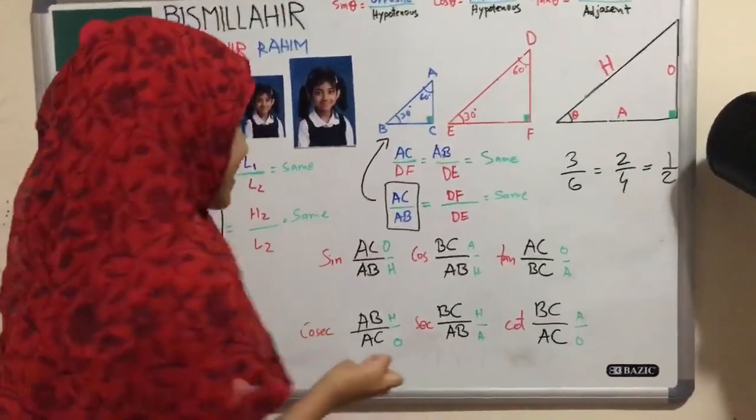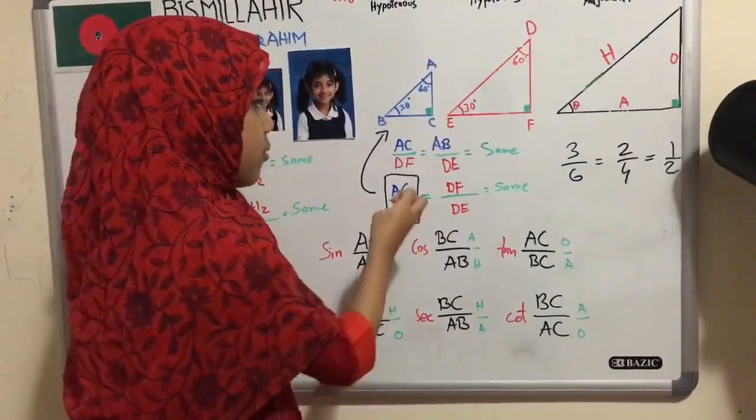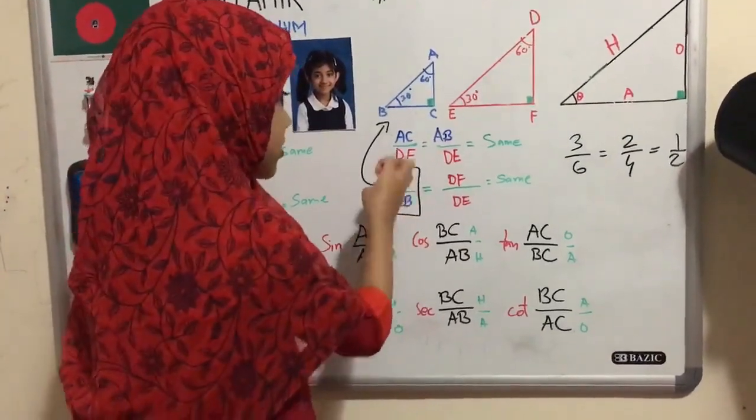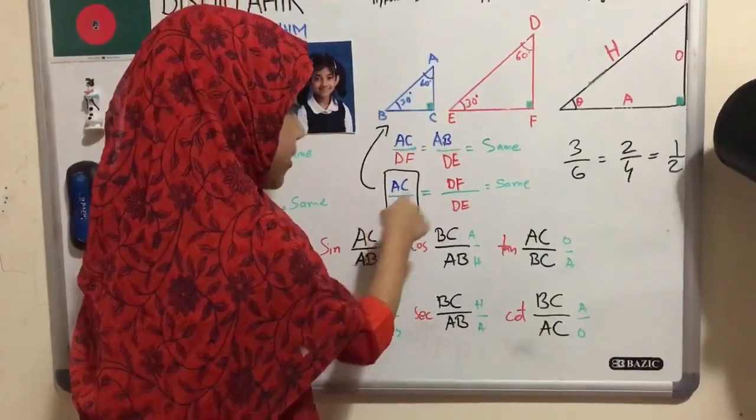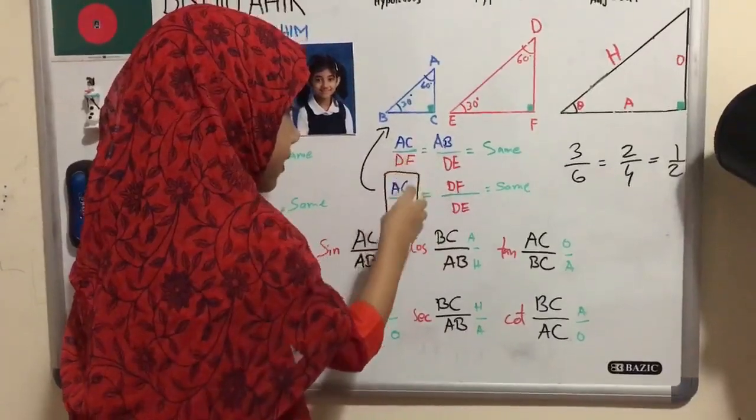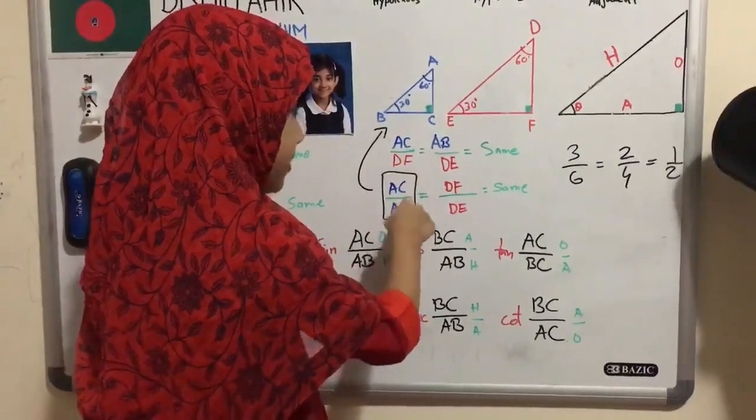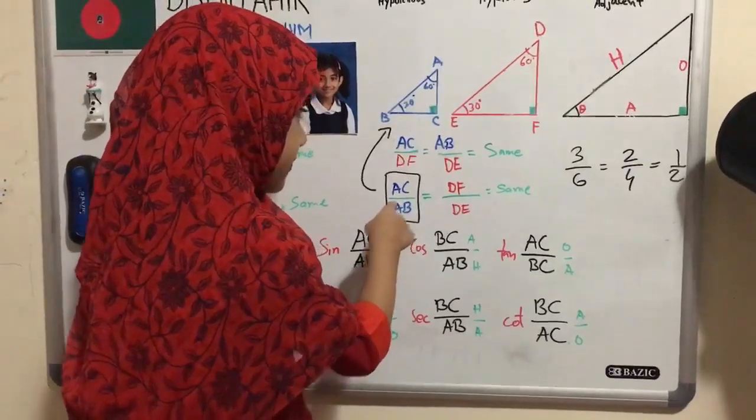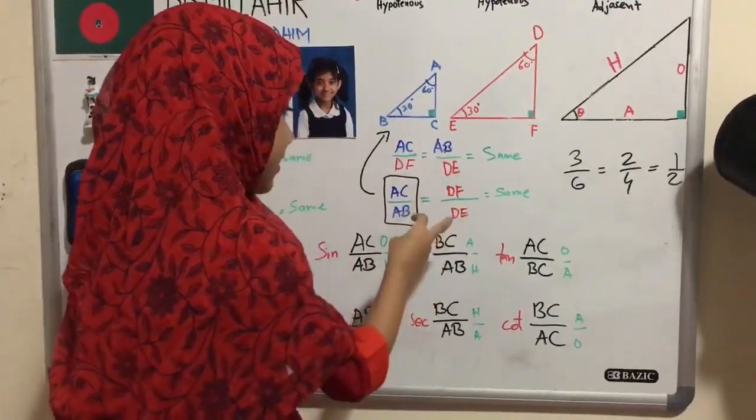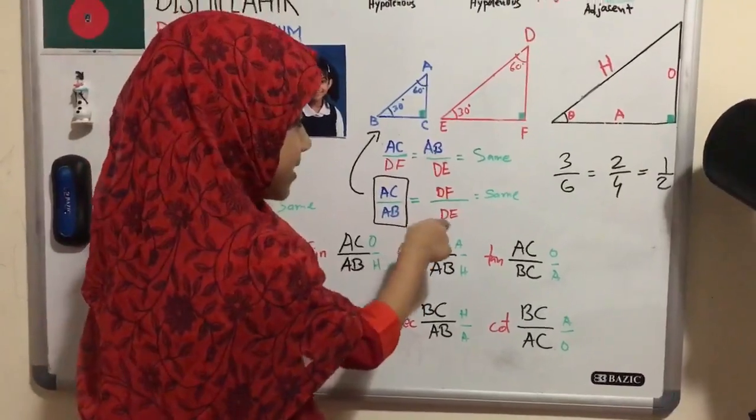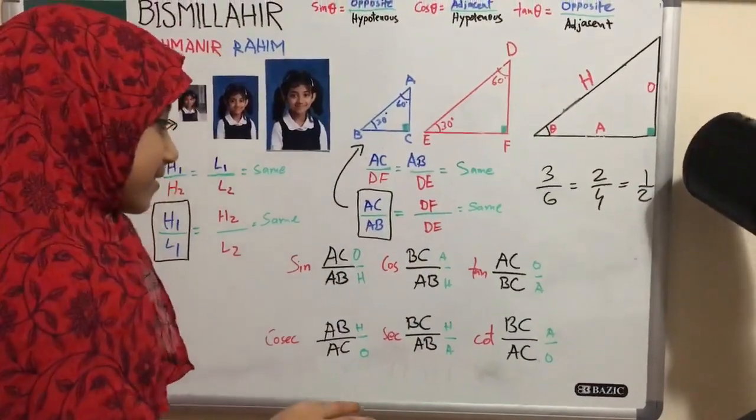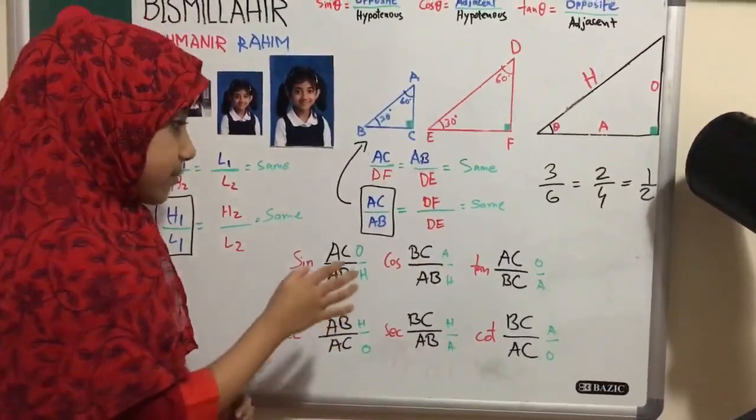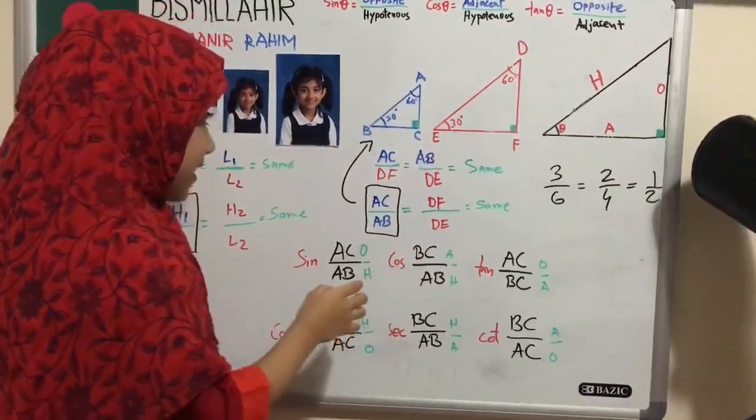So then you alternate here also. So AC stays there, AB goes up and DF comes down. AB goes down and DF goes up. So DF and AB and DE stays there. So now there is no more two triangle. AC by AB is all those two sides in the same triangle. Which one? AC and AB in the same triangle.